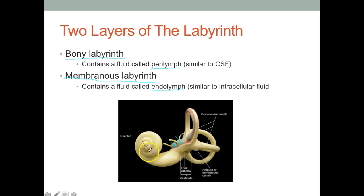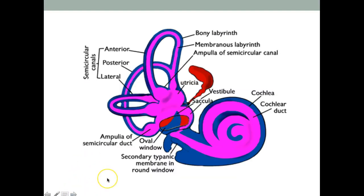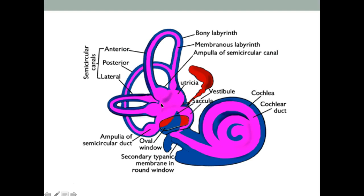Think about it this way: you have a container, pour a little water in it, then put another container in it and pour more water in that container — that's what it's like. The bony labyrinth is the white layer; the pink area represents the space containing perilymph. Then we have the membranous labyrinth, and inside it you find endolymph. The dark blue here represents the bony labyrinth and the pink or light purple represents the membranous labyrinth — one layer inside another, each containing different fluids.